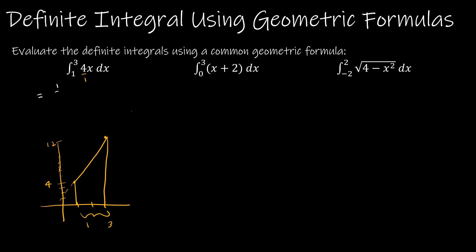Using the trapezoid formula: one-half times height 2 times the sum of the bases 4 plus 12. One-half times 2 is 1, and 4 plus 12 is 16. So the final answer is 16.